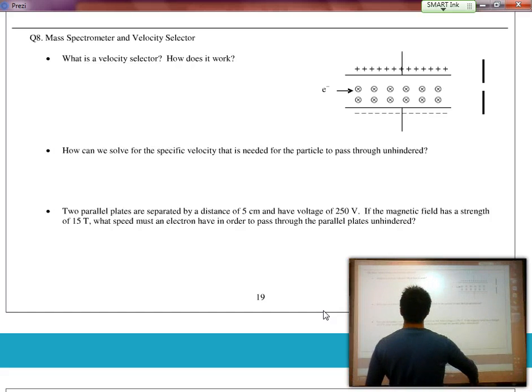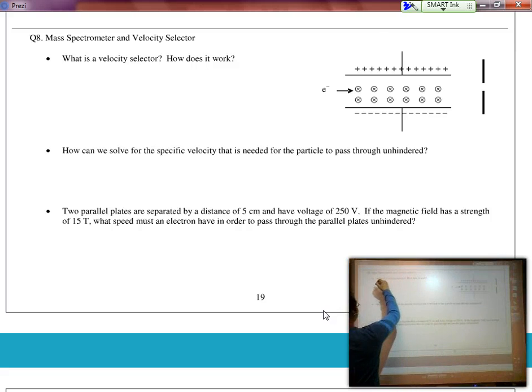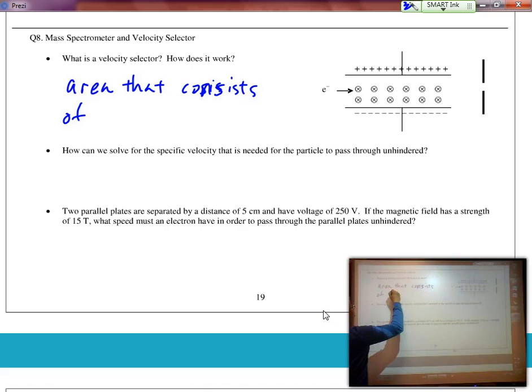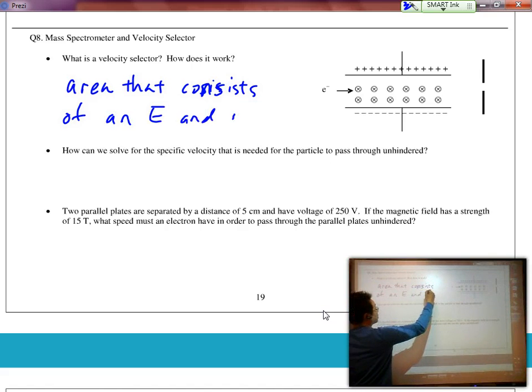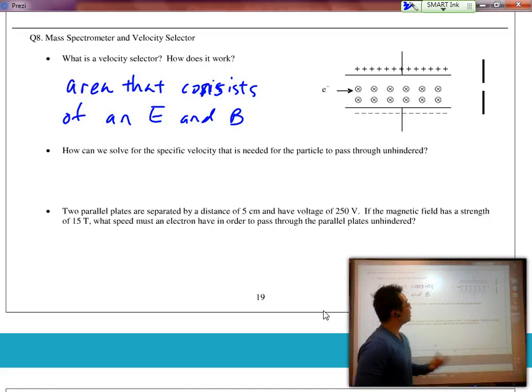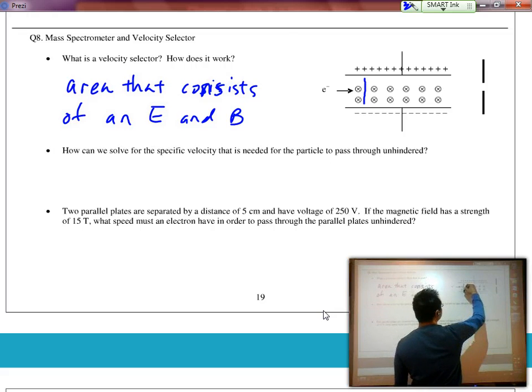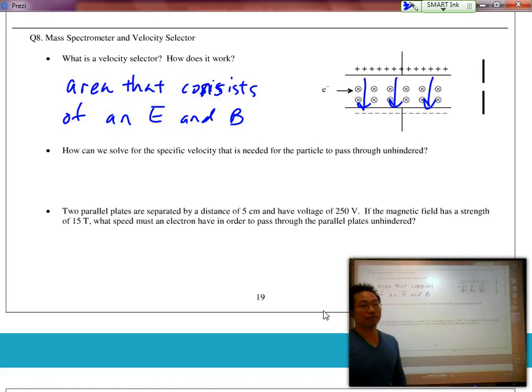A velocity selector is basically an area that consists of an electric field and a magnetic field at the same time. Now because there is an electric field and a magnetic field at the same time, if we were to take a look at this diagram over here, we know that electric field ends go out of positive and into negative.